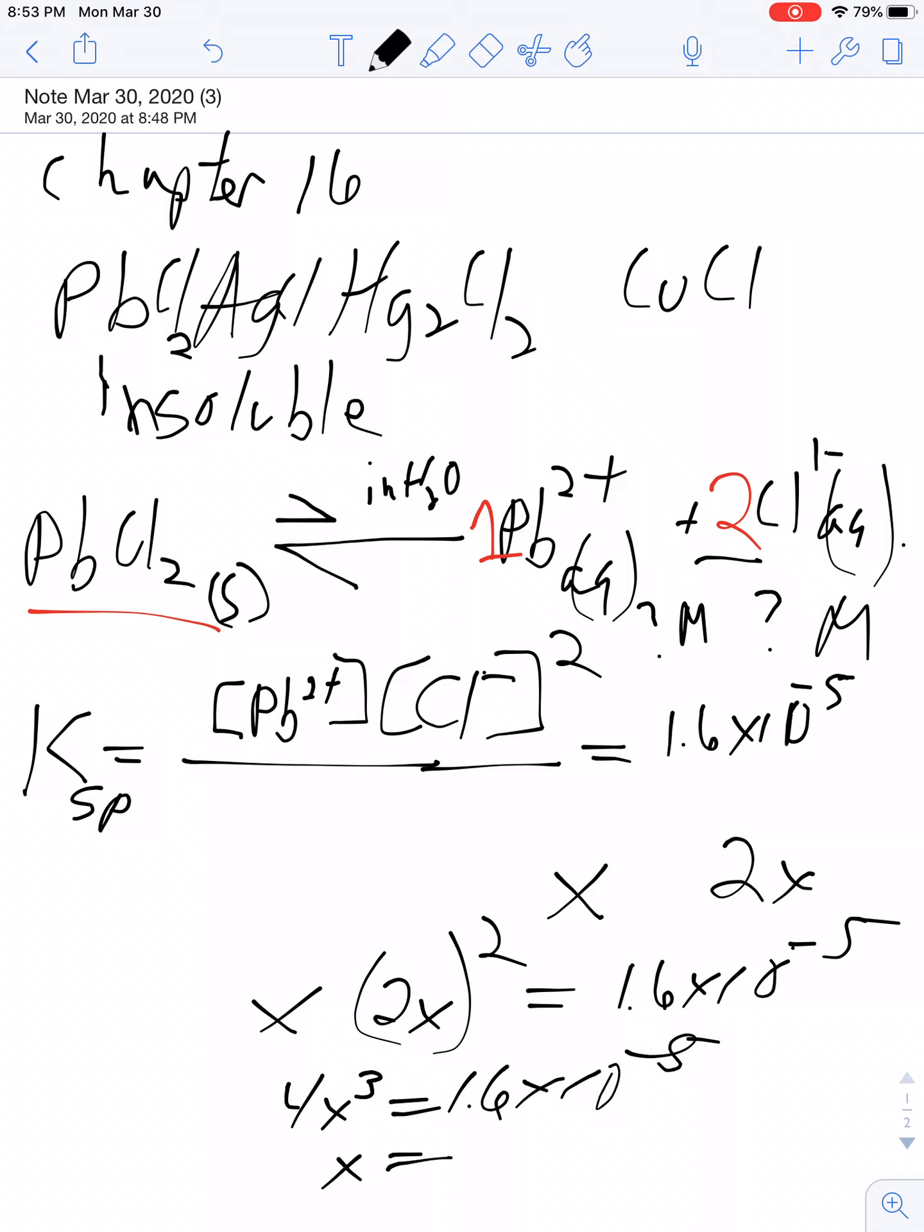And I get 0.0165 molar. That is the concentration of the lead ions. So then what would the concentration of the chloride ions be? They would be twice as much.